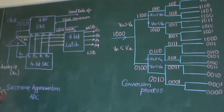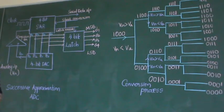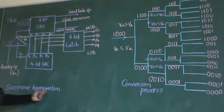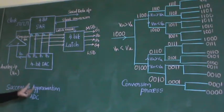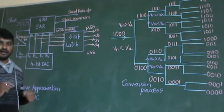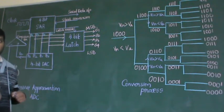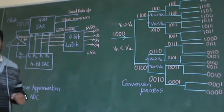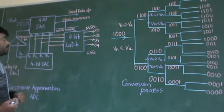I hope you are clear with the flash converter ADC. This is the second ADC, which is called the successive approximation ADC — successive approximation register ADC, that is analog to digital converter. Here also we are providing the analog input and receiving the digital output.